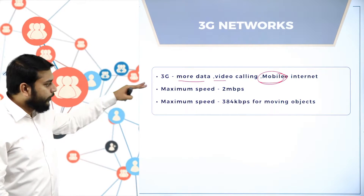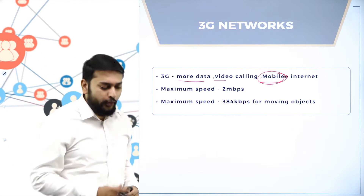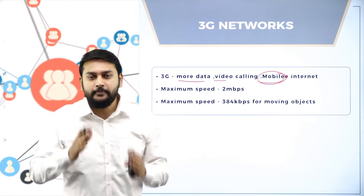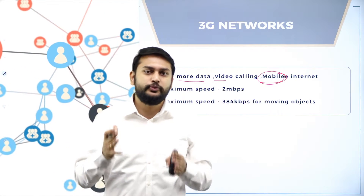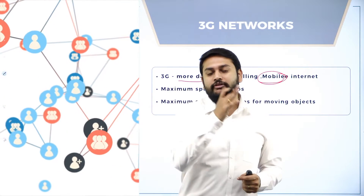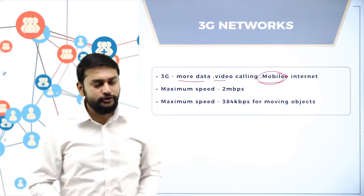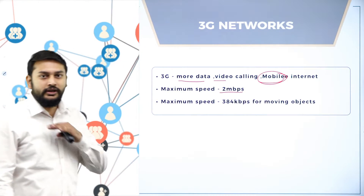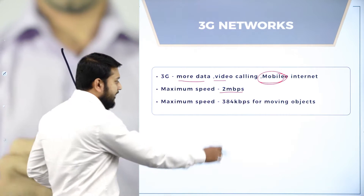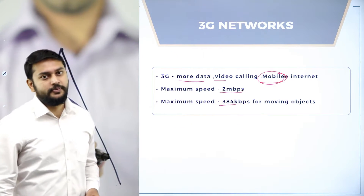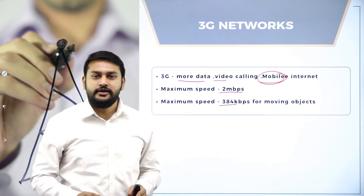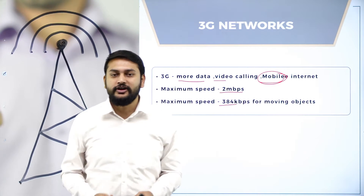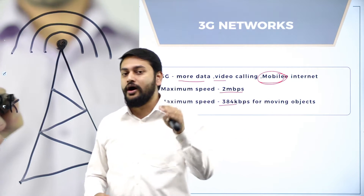When you come to 3G, you need to observe two important aspects. The internet speed differs between a stationary person and one who is traveling. The maximum speed for a stationary user in 3G is 2 Mbps, whereas when traveling the speed drops to 384 Kbps. So the speed varies — if you are in one place the speed is higher; if you are traveling, speed reduces automatically.